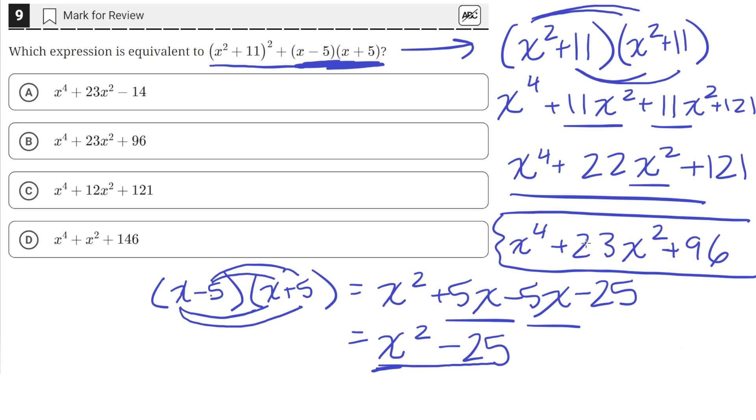121 minus 25. So now that we've added both these terms together, this is the final simplified form, and that's equal to answer choice B.